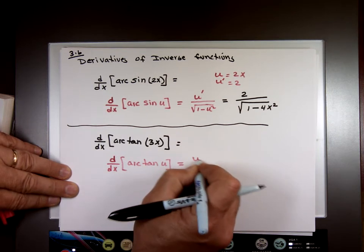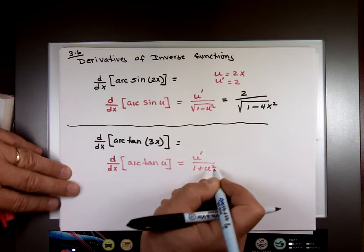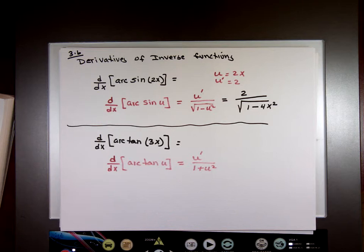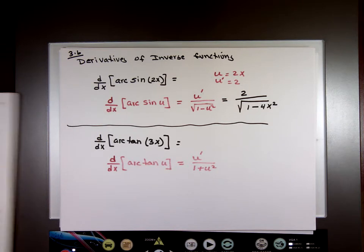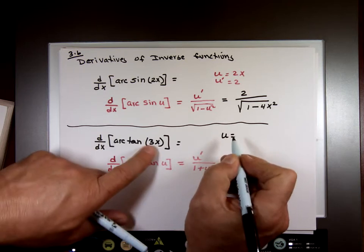It's u prime over 1 plus u squared. Now, let u equal, in this case, u will be 3x.